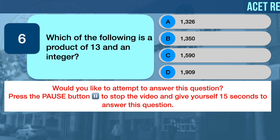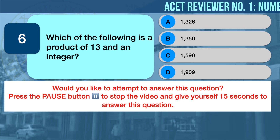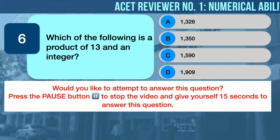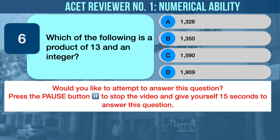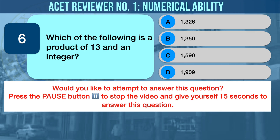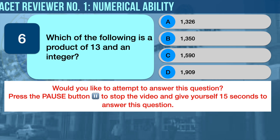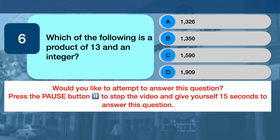Numerical Ability Problem Number Six: Integers. Which of the following is a product of 13 and an integer? A) 1,326, B) 1,350, C) 1,590, D) 1,909.